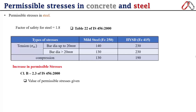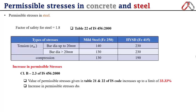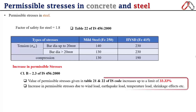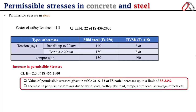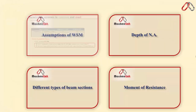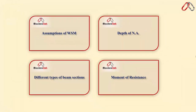One important point: all permissible stress values given in Tables 21 and 22 of IS code can be increased up to a limit of 33.33% when designing for wind load, earthquake load, temperature load, or shrinkage effects. So whenever you design under these conditions, increase the stresses up to a limit of 33.33%.